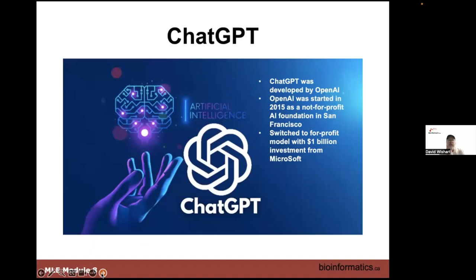Probably everyone's heard about ChatGPT because it's been in the news a lot. There's a Hollywood strike because of it right now, new laws starting up, people have signed letters, and Jeffrey Hinton resigned from Google because of it. It was developed by a company called OpenAI, which started about seven or eight years ago as a not-for-profit foundation in San Francisco. Microsoft converted OpenAI to a for-profit model. Among the people who started OpenAI was Elon Musk, but he left in 2017.